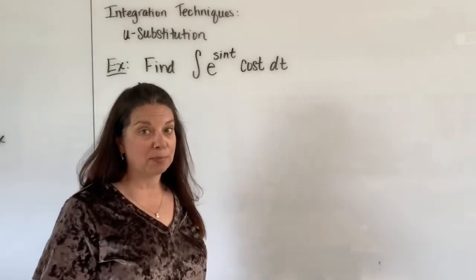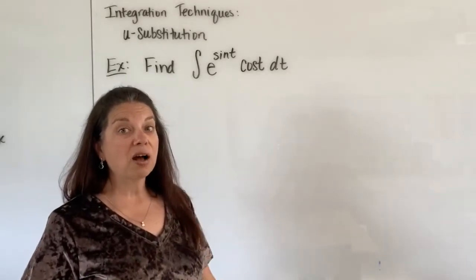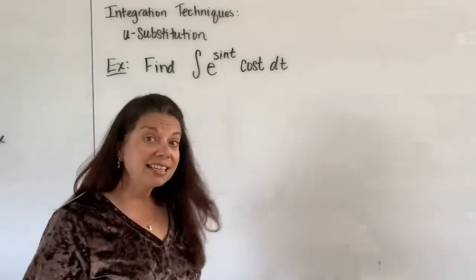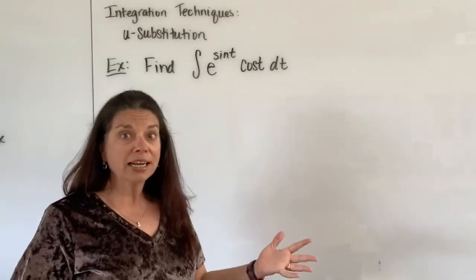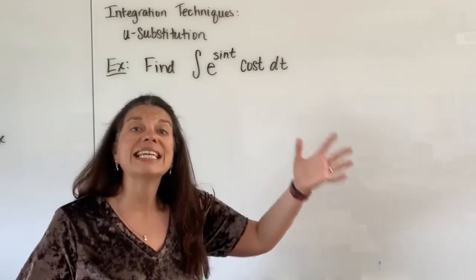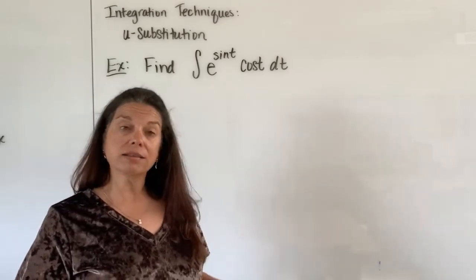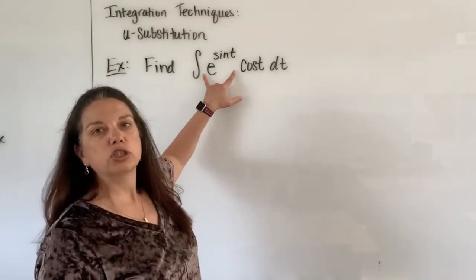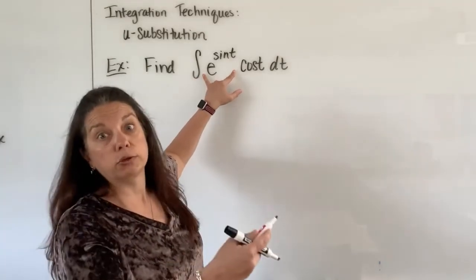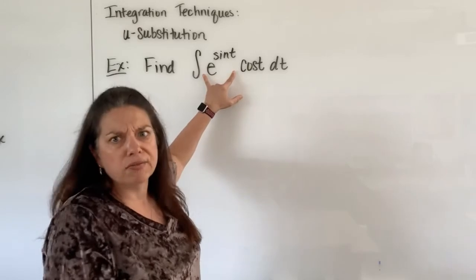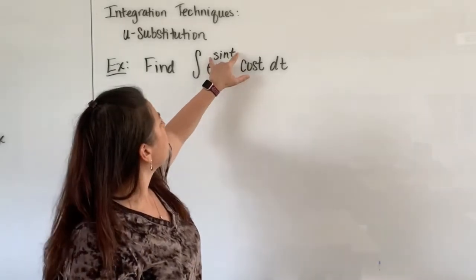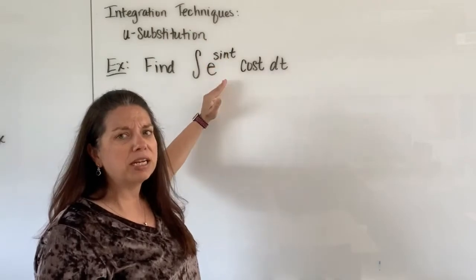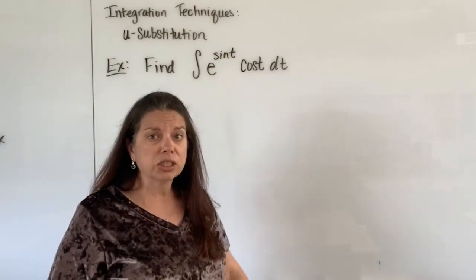Like in the last examples, you have to figure out what is the best u that you should pick. The strategy is to pick the u that's the inside function. The inside function here is going to be the inside function to the e — to whatever power. And here what we notice is that sine t has been embedded into that exponential function. Thus, we have a composition.